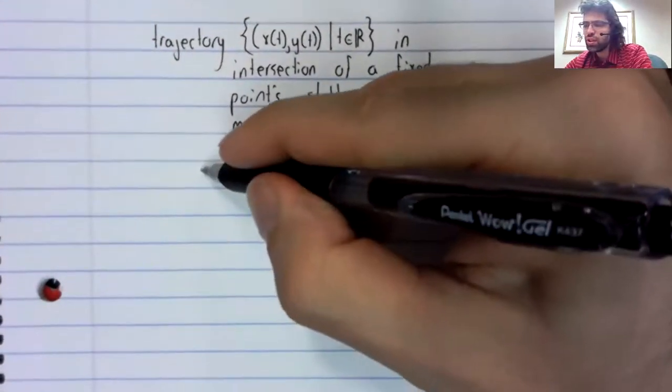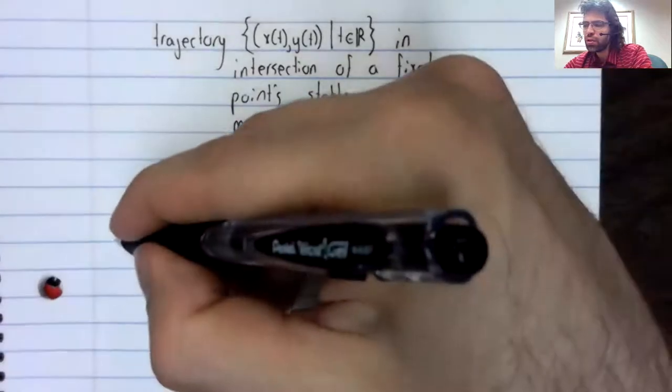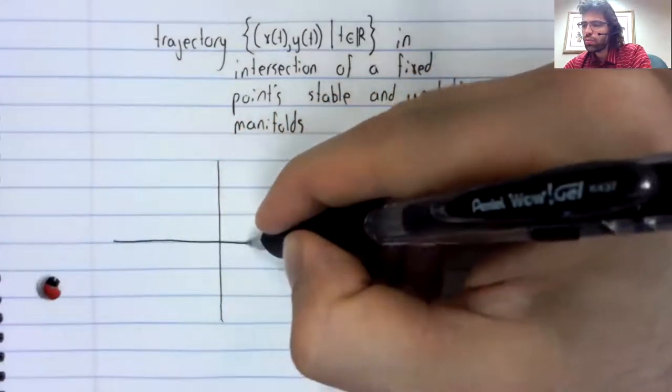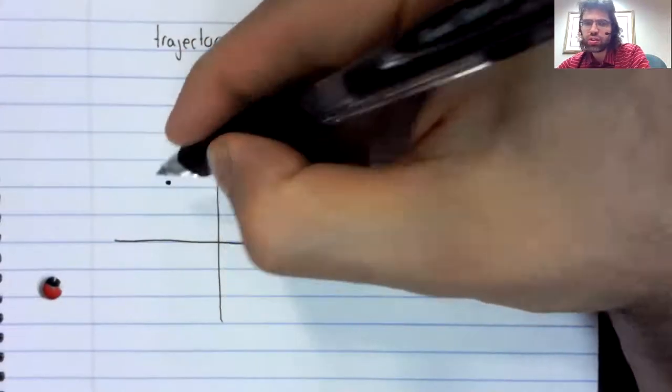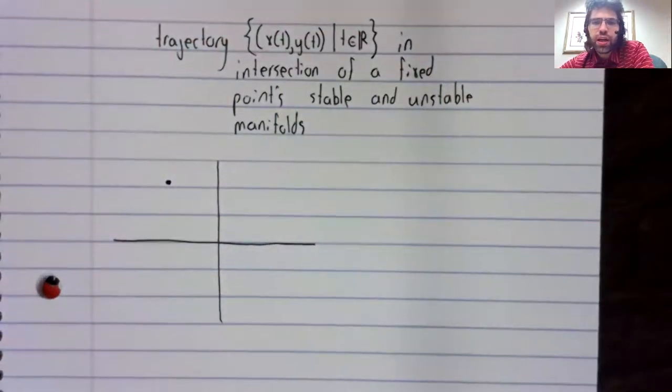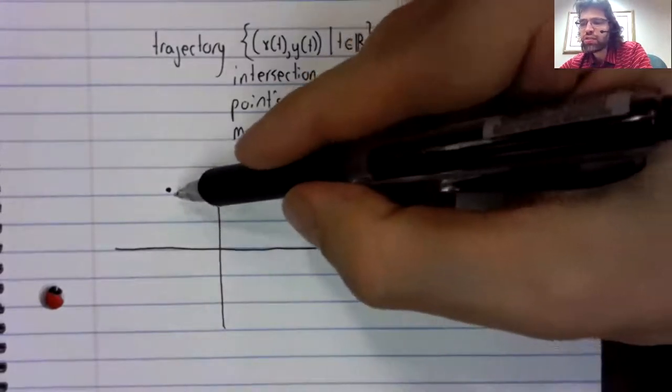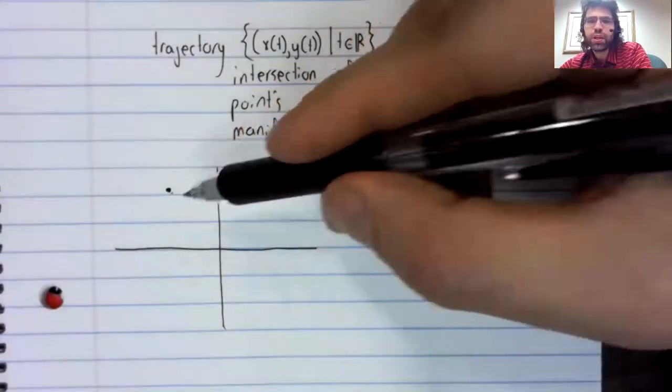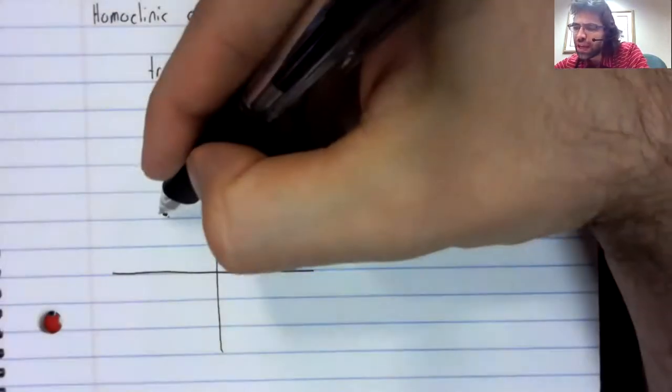So what's this look like? Well, suppose we have a fixed point. And we have used the Jacobian to classify this fixed point, and we've found that it's a saddle.